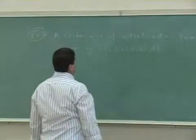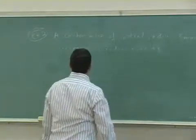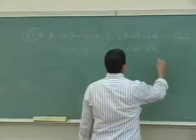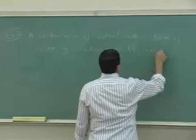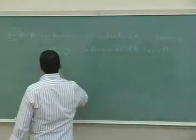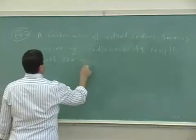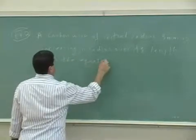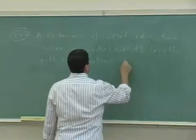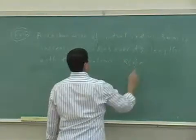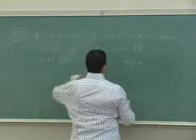Okay, a carbon wire of initial radius three millimeters is increasing in radius over its length with the equation, let's do this way, a little r of x.